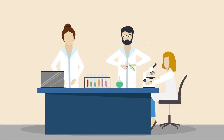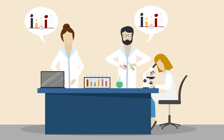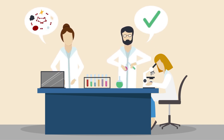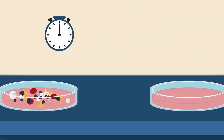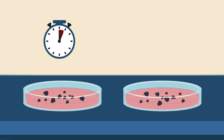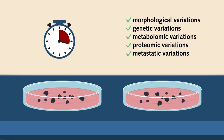As the technique used impacts the cancer cells and the TME's heterogeneity, scientists should be able to monitor the proportion of each cell type in the tumor microenvironment and better understand their complex interactions. Isolating malignant cells would enable scientists to better investigate the initial characteristics of the carcinogenic cell population, such as their potential morphological, genetic, metabolomic, proteomic, and metastatic variations.